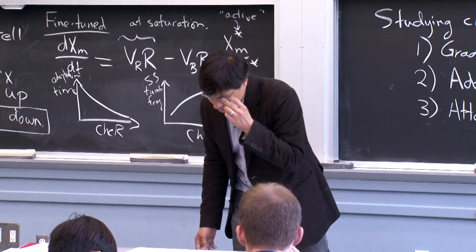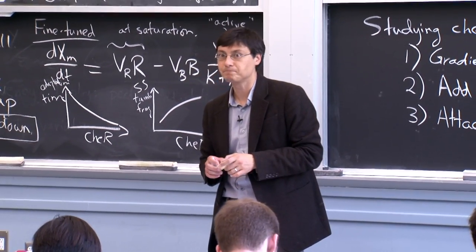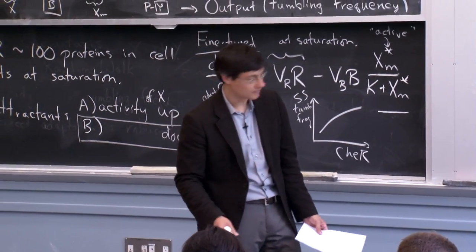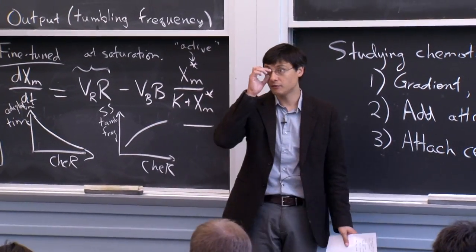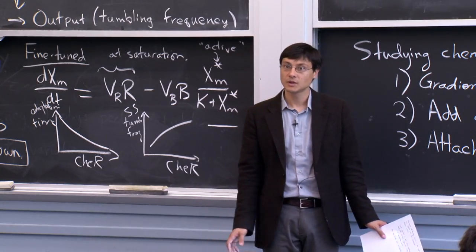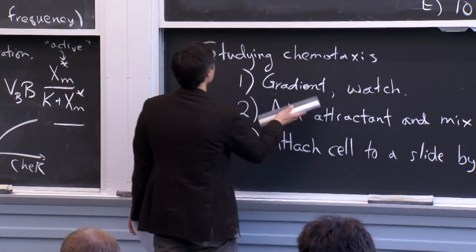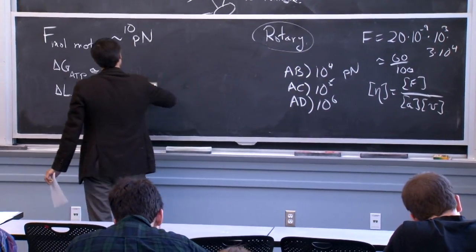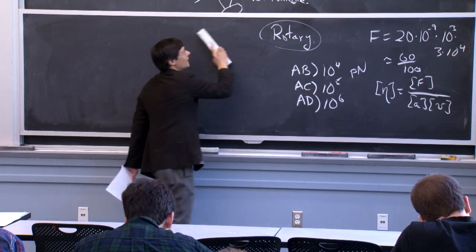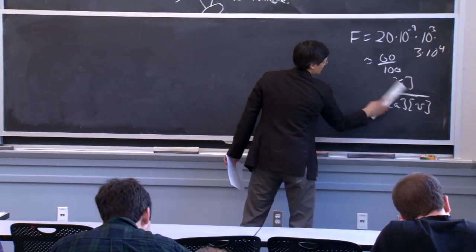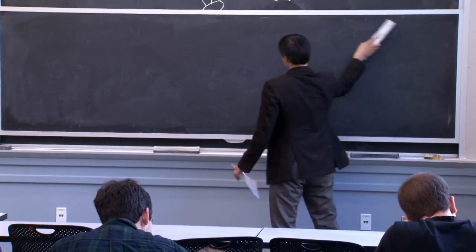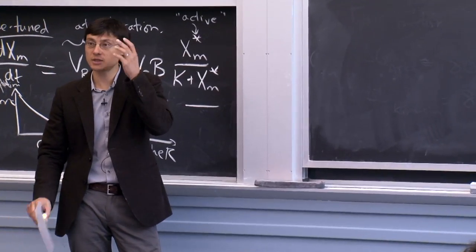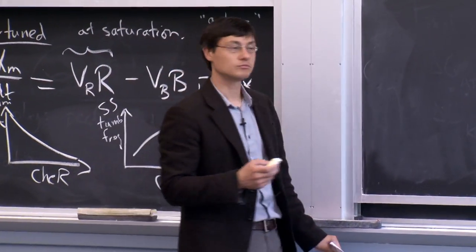The last thing to address is what this means for individuality. In a clonal population of bacteria — all with exactly the same genetic code — we can ask: in what ways will individual cells be similar or different? For example, we could measure the tumbling frequency across this population and ask about the distribution.